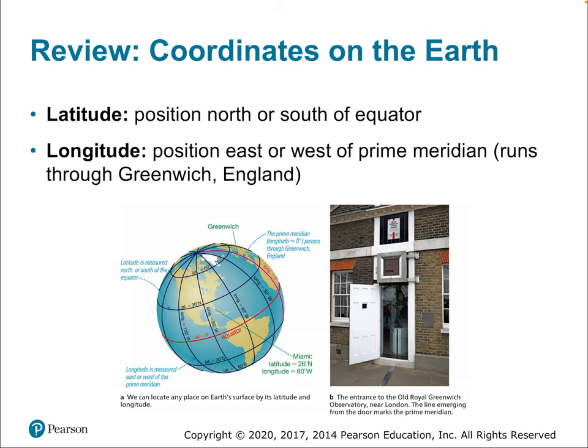To review coordinates on Earth: latitude is the position north or south of the equator, and longitude is the position east or west of the prime meridian — an arbitrary chosen point that historically was chosen to pass through Greenwich, England. The equator runs at latitude zero, and the prime meridian runs at longitude zero.